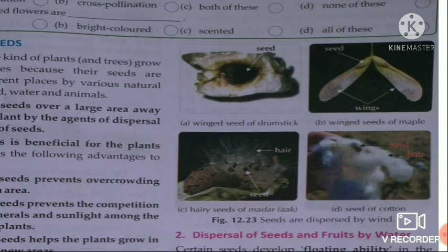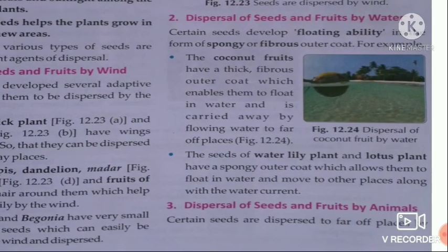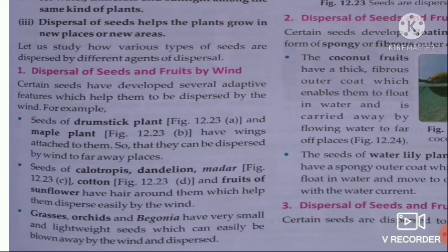Other seeds like those of madar have hairy structures, and seeds of cotton also have hair-like structures — a white hair-like structure — which helps them float in the air. Some seeds are very light in weight, such as grass, orchids, and begonia. So seeds and fruits are dispersed by wind through wings like drumstick or maple, or hair-like growth such as cotton, madar, and dandelion, or by being very small and light-weight.